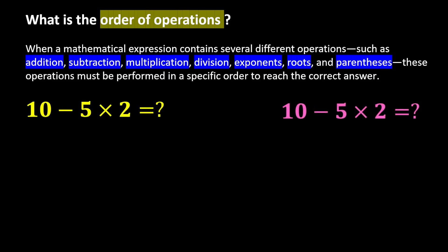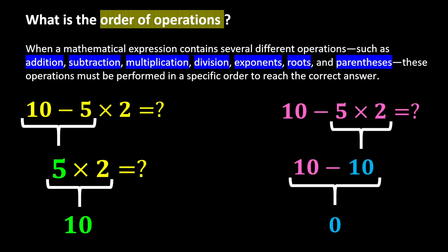10 minus 5 multiplied by 2. If we first calculate 10 minus 5, we get 5, and 5 multiplied by 2 gives us 10. But if we first calculate 5 multiplied by 2, we get 10, and 10 minus 10 gives us 0.